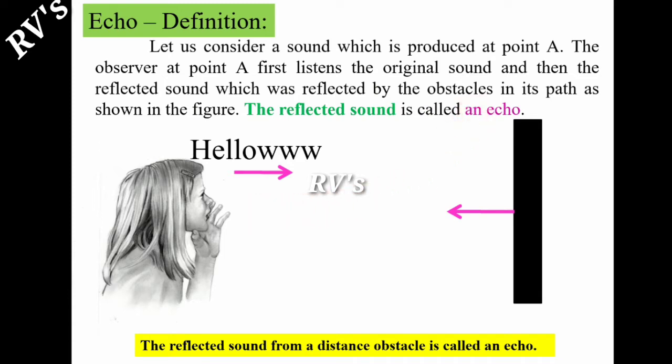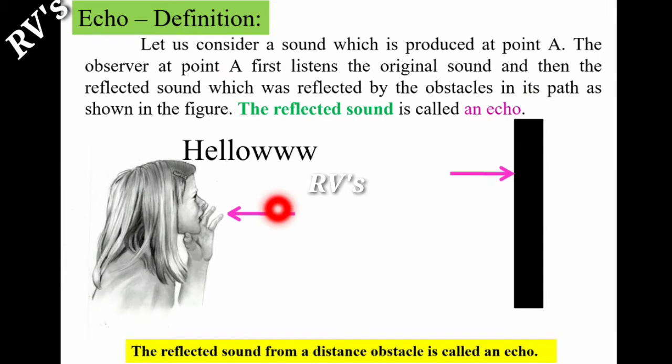Echo is the reflected sound. For example, when sound is generated and it touches the obstacles and reflects back, this reflected sound is called echo. In one word, the reflected sound is nothing but echo. The definition is: the reflected sound from a distant obstacle is called an echo.